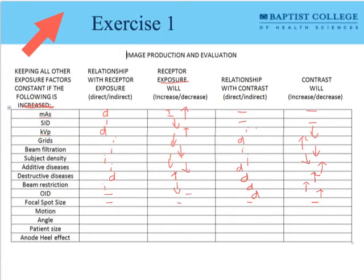Patient motion is best thought of as a geometrical factor, affecting the amount of detail and spatial resolution on the image. Angulation is also a geometrical factor. We're starting to see the importance of making the distinction between a technical factor and a geometrical factor as we work through these considerations.